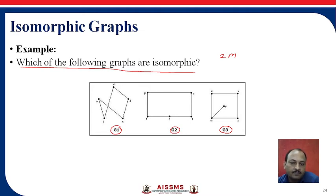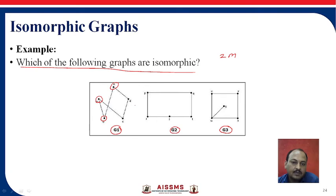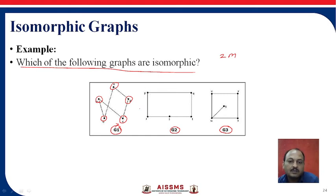Take the example of G1. All the vertices are connected to each other with edges. Vertex A is connected with two edges. Vertex B is connected with two edges. Vertex C is also connected with two edges. Vertex D is also connected with two edges. So this graph satisfies the isomorphic condition according to the definition. However, we have to compare this graph with another graph to confirm that both graphs are isomorphic.